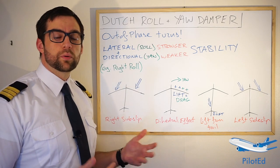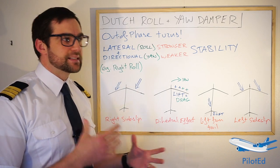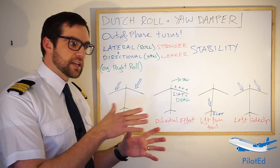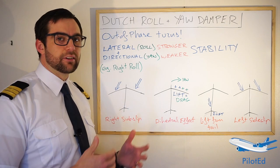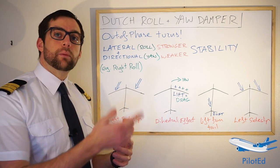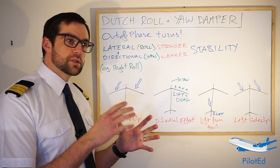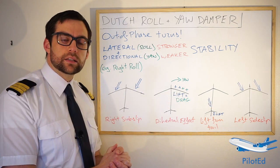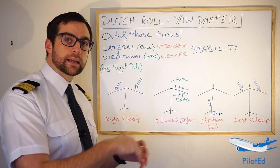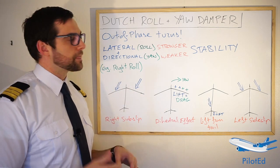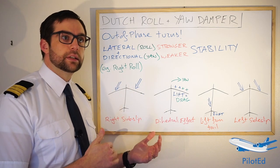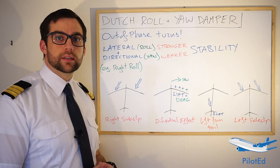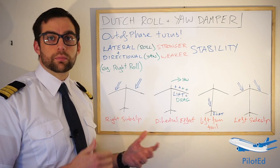If the yaw damper is inoperative for any reason, the best technique would be to almost leave the aircraft alone and let it settle. It is inherently positively stable, and as we covered in the stability video, it will get back to its original position even if it oscillates a little getting there. Some older aircraft could be negatively stable and would not recover, but most modern aircraft would recover even if the yaw damper wasn't operative.